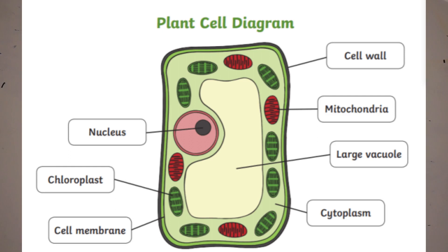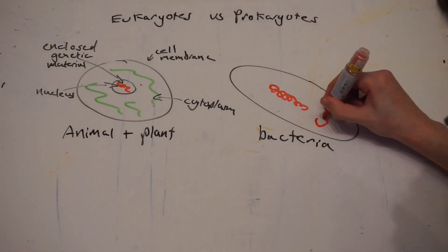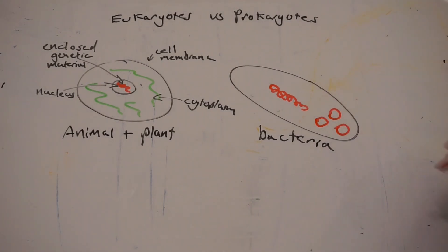Plant cells also have all those structures but they can also have a cell wall, which is made of cellulose and helps strengthen the cell. A permanent vacuole which contains cell sap to control the rigidness of the cell. And it also contains chloroplasts which is where photosynthesis occurs. So those are the differences between animal and plant cells, but they are both eukaryotic cells — a plant cell just has some more plant-specific structures within it.